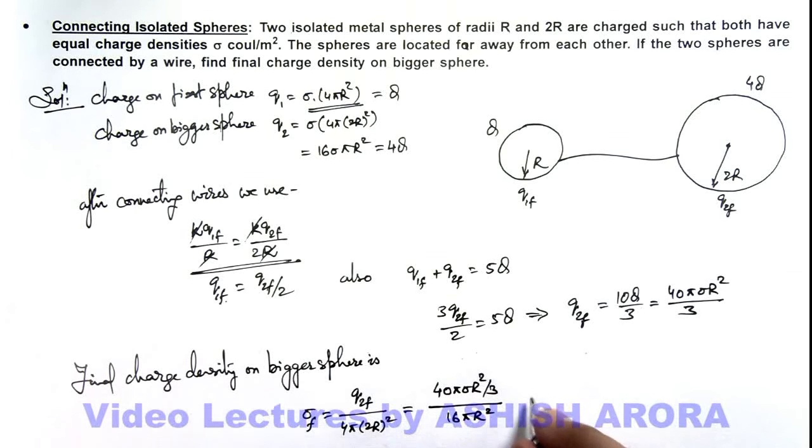On simplifying, you can see here πR² gets cancelled out, and we'll be getting it to be 5σ by 6. That is the final surface charge density on the bigger sphere.